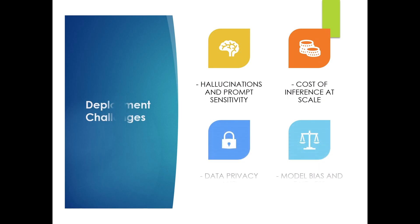The next question is: what are key challenges in deploying generative AI? The first one is hallucinations — the model generates false information. Then prompt sensitivity: small changes in prompts give different results. Next is bias, which reflects social and dataset biases, and privacy risks of data leakage if trained improperly. Also cost — running large models in production is expensive.